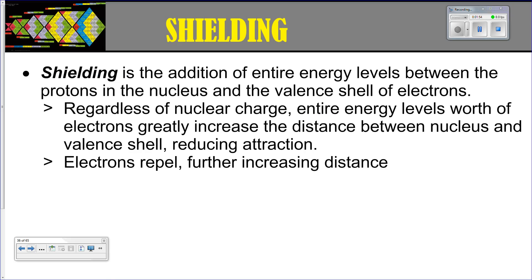The second phenomenon is called shielding. This is the addition of entire energy levels that end up going between the protons in the nucleus — that positive charge — and the valence shell of electrons. Using a Bohr model as a crude illustration, if you've got your nucleus and you've got energy levels, those inner energy levels are shielding the nucleus from the valence electrons. Adding energy levels reduces attraction. In addition to that, the electrons are going to be repelling each other, which further increases the distance between them.